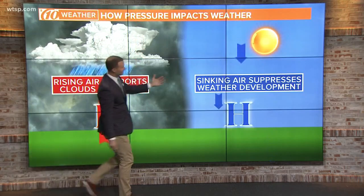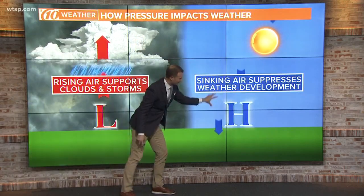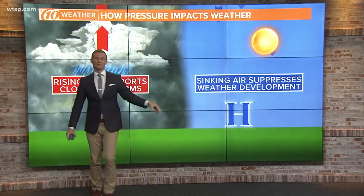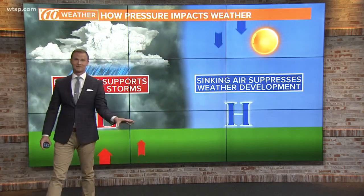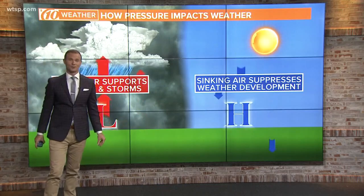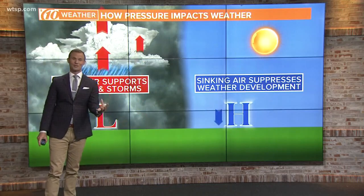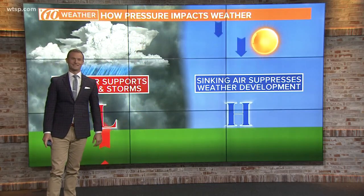In areas of sinking air, that suppresses weather development and suppresses cloud cover. And that's actually what we have in control right now — that high pressure system bringing all the sunshine.